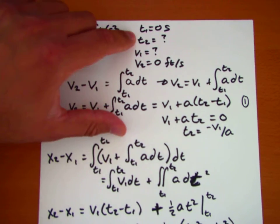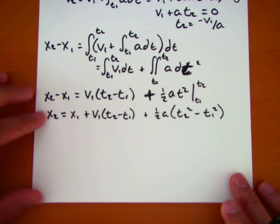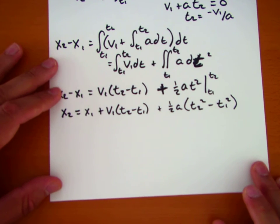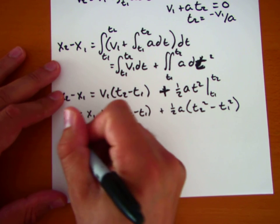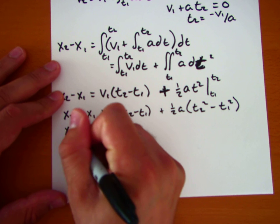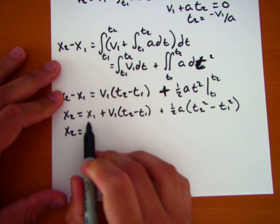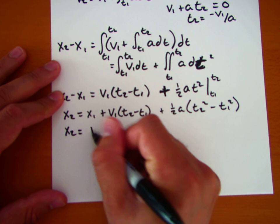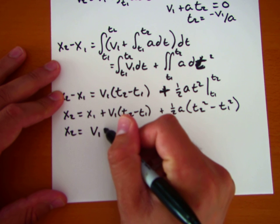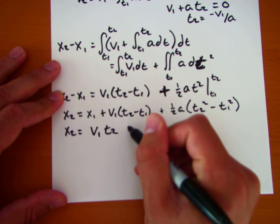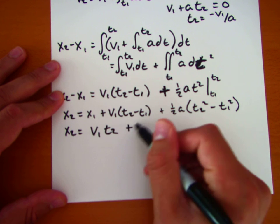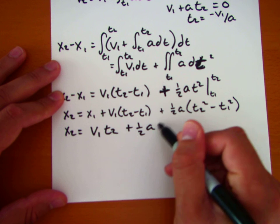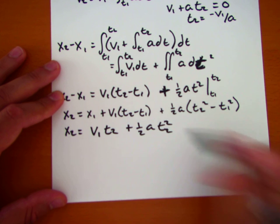And again, remember we've got our simplification, specifically x1 is equal to 0 and t1 is equal to 0. So if we plug that in, we're going to get x2 is equal to v1 times t2, and then over here we get plus 1 half a t2 squared.